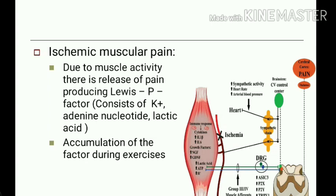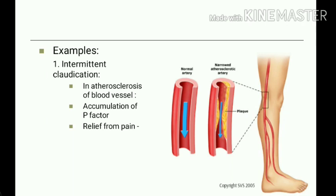Examples of ischemic muscular pain include intermittent claudication. In atherosclerosis, atheroma formation in blood vessels makes blood supply to the limb adequate at rest, but during activity the Lewis P factor accumulates and the blood flow is insufficient, producing pain. The person feels pain while performing activity but no pain at rest, because the P factor is washed away by blood flow during rest.